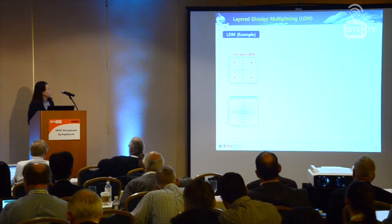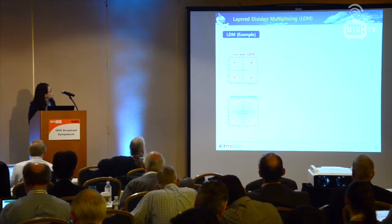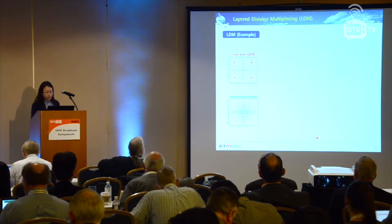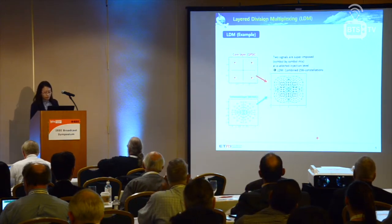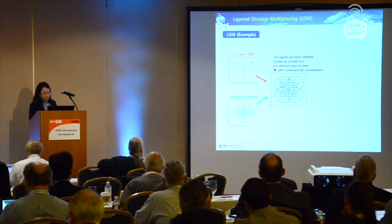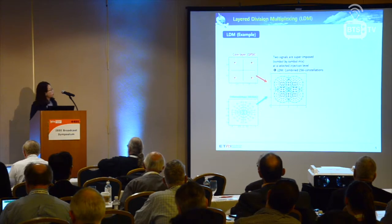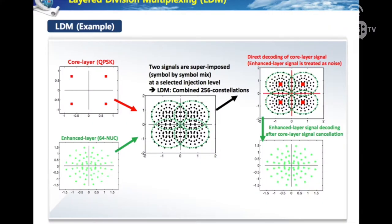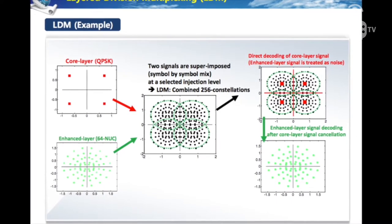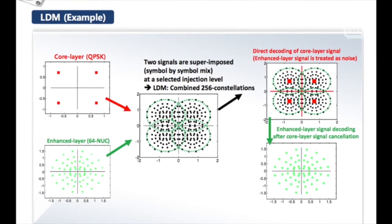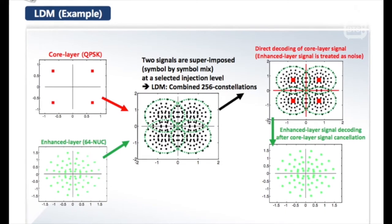This page is an example of an LDM constellation where the core layer uses QPSK and the enhanced layer uses 64 non-uniform constellation. The combined LDM signal has 256 constellations, and according to the injection level between the two layers, the constellation becomes more dense or wider. In LDM each signal has different robustness, so a receiver first decodes the most robust layer signal, the core layer QPSK, and then cancels it from the received signal. After that, the receiver decodes the second, less robust enhanced layer 64 NUC.